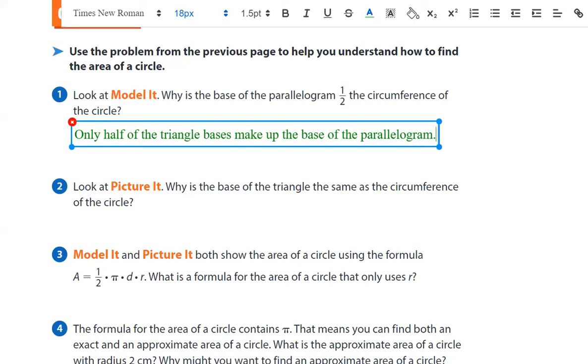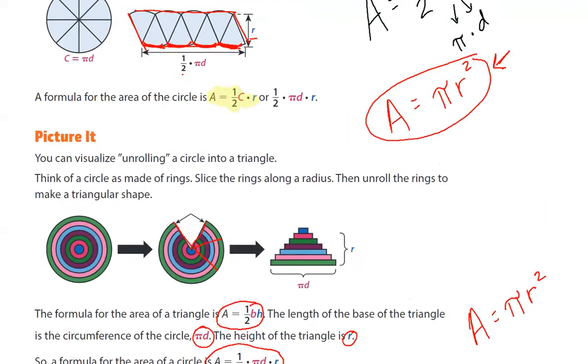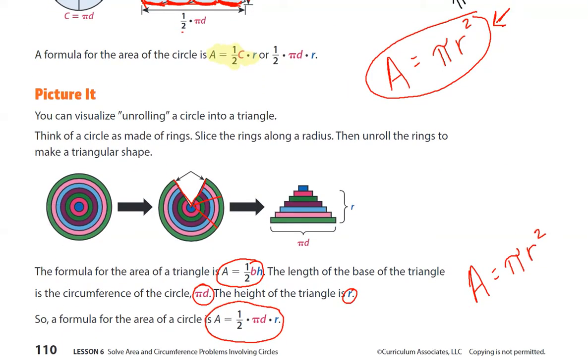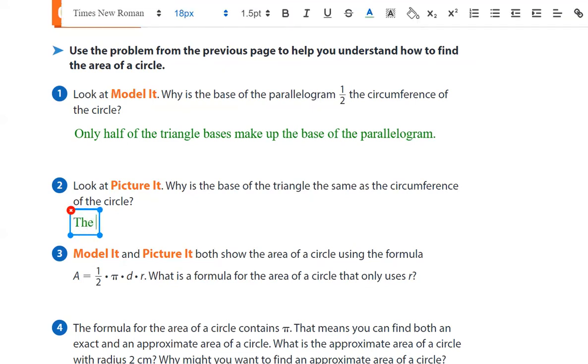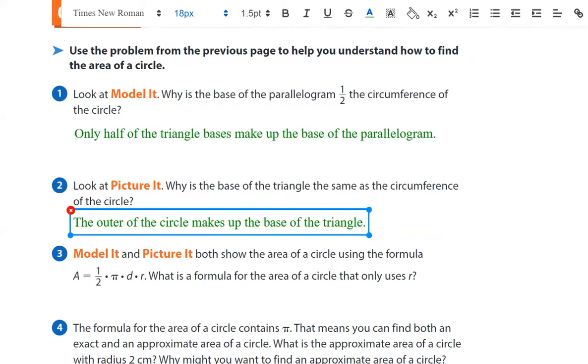Number two. Look at the picture. Why is the base of the triangle the same as the circumference of the circle? Because when we cut it up and unrolled it. How can we word that? The outer ring of the circle makes up the base of the triangle.